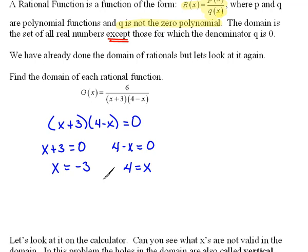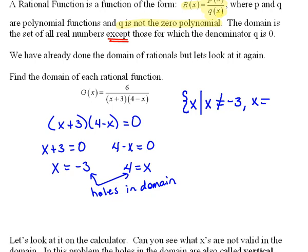So our domain would be everything except these two numbers. These two numbers are the holes in our domain. If I write that using set builder notation, this would be the set of all X's such that X cannot equal negative 3, X cannot equal 4.